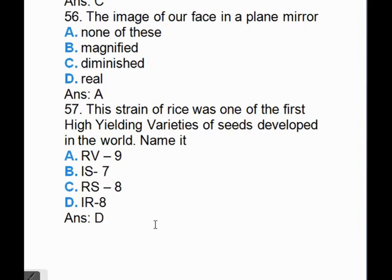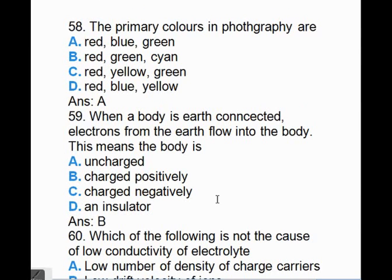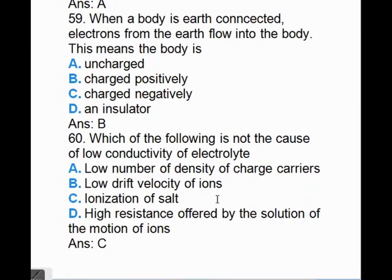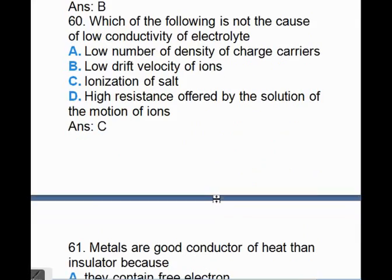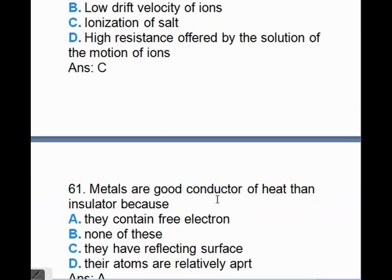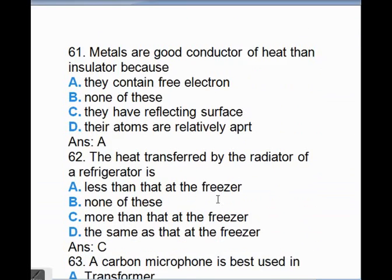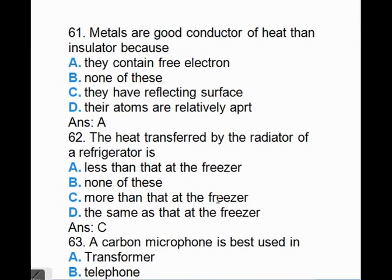The primary colors in photography are, answer is A, RGB, red, blue, green. When a body is earth connected, electrons from the earth flow into the body. This means the body is B, charged positively. Which of the following is not the cause of low conductivity of electrolyte? The answer is C, ionization of salt.